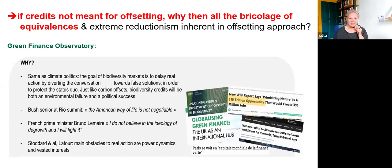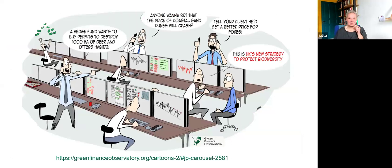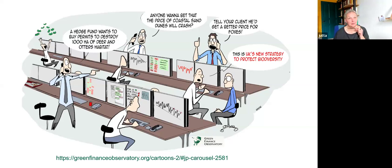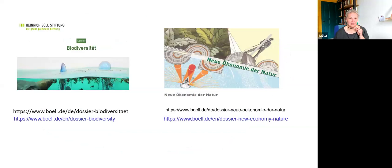I end with a nice cartoon and want to alert you to a series of cartoons by the Green Finance Observatory — Frédéric Hache has done a really nice series there, a good resource for visual illustrations of the absurdities around biodiversity offsetting. You'll also find a lot of information, both analysis and project documentation, on the two dossiers on the topic. With that, I say thank you and let's move to the discussion.